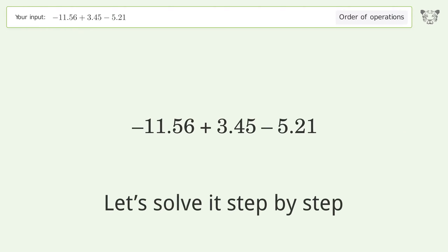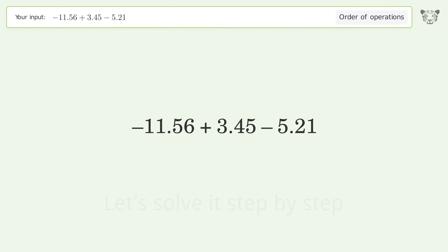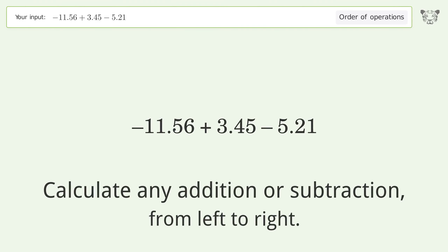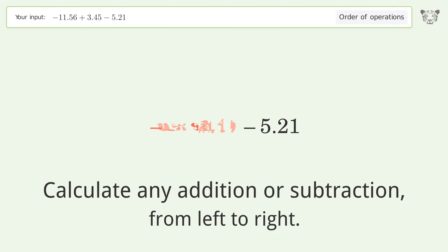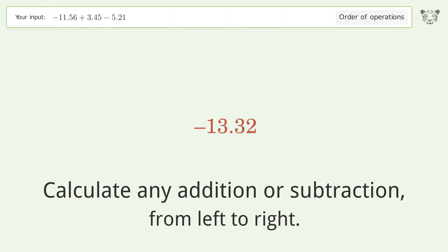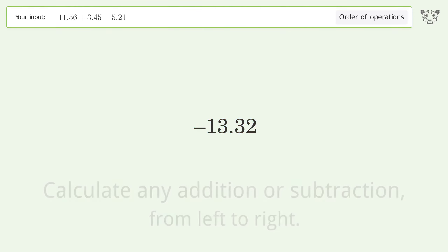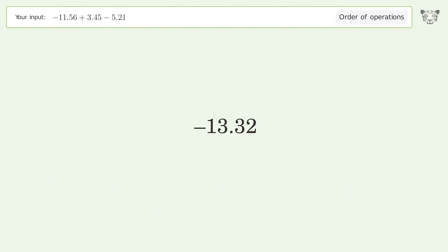Let's solve it step by step. Calculate any addition or subtraction from left to right. Negative 11.56 plus 3.45 equals negative 8.11. Negative 8.11 minus 5.21 equals negative 13.32. And so the final result is negative 13.32.